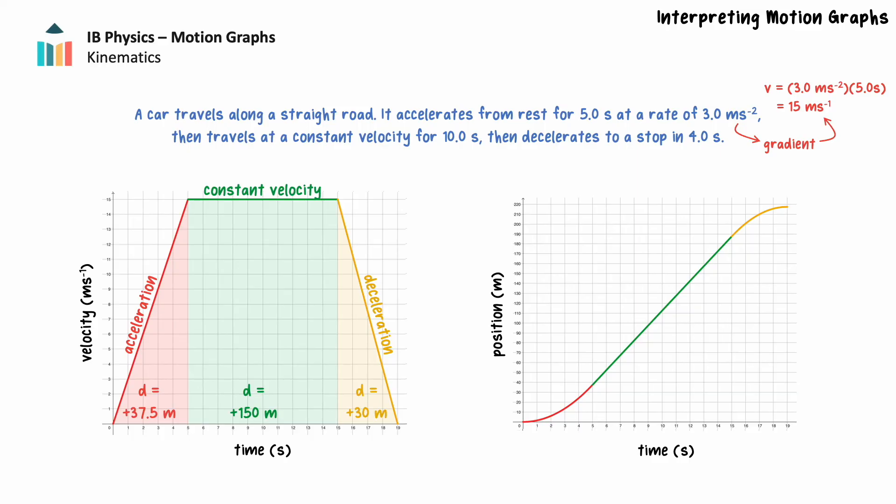Drawing velocity-time and position-time graphs are common Paper 2 questions. Interpreting a velocity-time or position-time graph to select a corresponding graph with a different vertical axis is a common Paper 1 question.